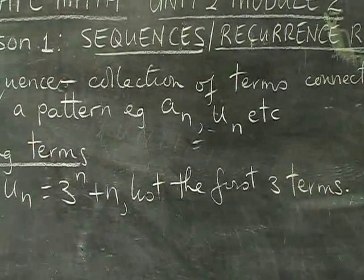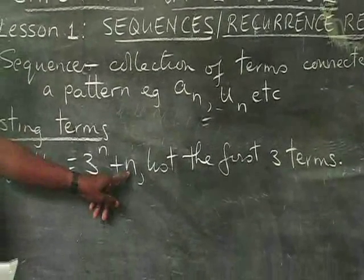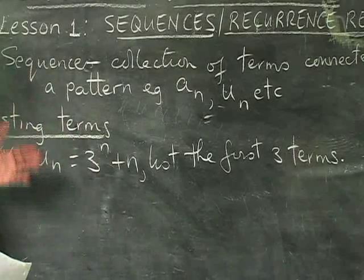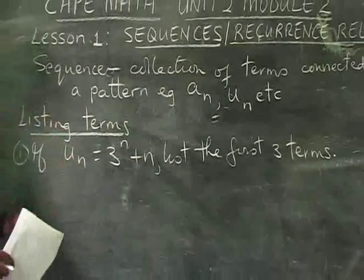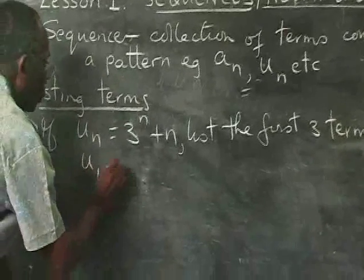Now listing the first three terms, we are going to start knowing that N means natural number. Natural means counting numbers, we'll start at 1. So N will be 1, 2 and then N will be 3. So it means that we can find U1, U2 and U3.